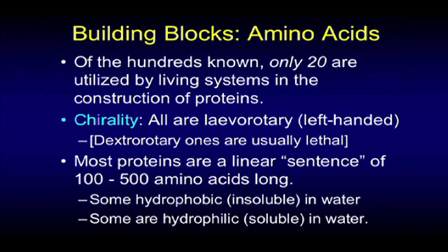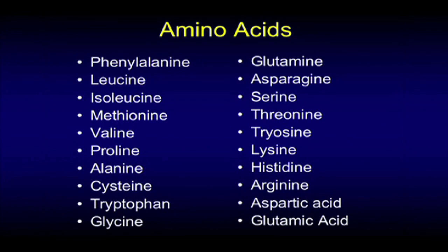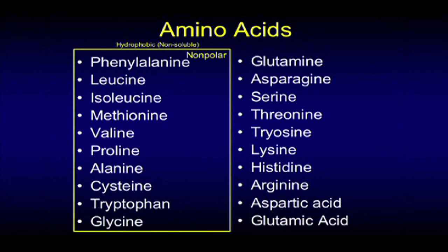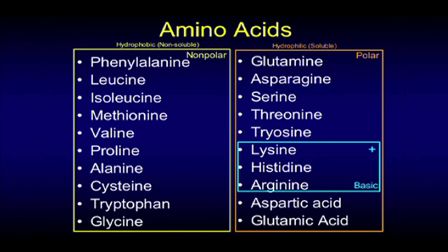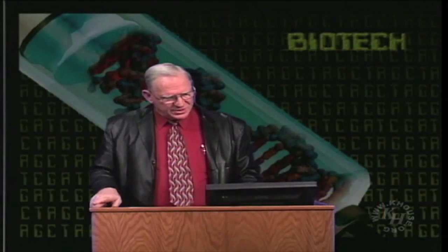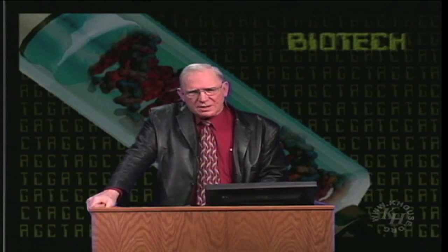Most proteins are simply a linear sequence of somewhere between 100 and 500 amino acids. Some are hydrophobic — insoluble in water — and some are hydrophilic — soluble in water. The 20 amino acids that make up life are well known to those in microbiology. Half of them are hydrophobic, or non-polar. The other half are polar, or soluble in water. Of the soluble ones, some are basic — positively charged — and some are acidic, with an extra electron. Those are the basic building materials.